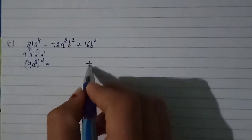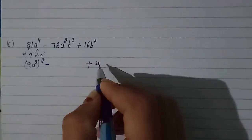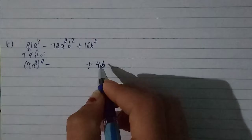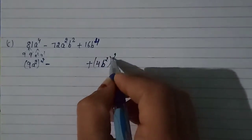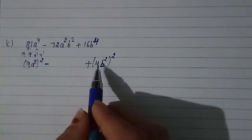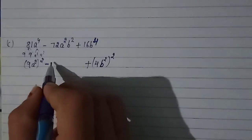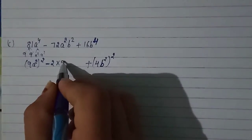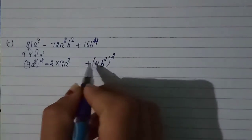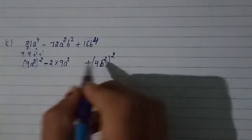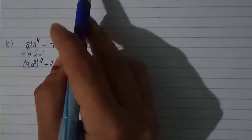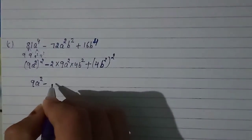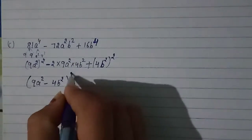16 is 4 squared, so 4b squared raised to the power 2. Now we have our a value and b value. So 2ab will be found: 2 times 9a squared times 4b squared. This fits the identity a squared minus 2ab plus b squared. So the answer is 9a squared minus 4b squared, whole raised to the power 2.